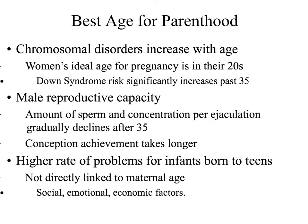It's been noted that the best age for parenthood physically is typically in the early twenties or late teens. However, cognitively and maybe even financially, that may not be the best age, as we may not be able to afford raising children. As we get older, the risk of chromosomal disorders — ending up with more or fewer than 46 chromosomes — starts increasing. Down syndrome, a chromosomal disorder occurring in the 21st pair of chromosomes, would result if a child received 47 chromosomes. This risk increases significantly when women are past the age of 35.